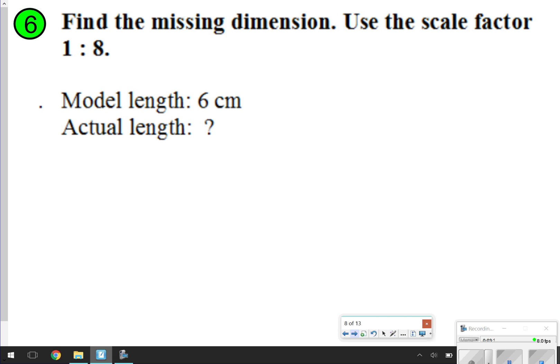Number 6, we're going to look at together. You're still going to write in your notes. This one, it says find the missing dimension, use a scale factor 1 to 8. So this is still going to be your scale, 1 to 8. When that is written without any units, we're actually going to talk about this on the next slide. That just means the first number is the model, and the second one is the actual.